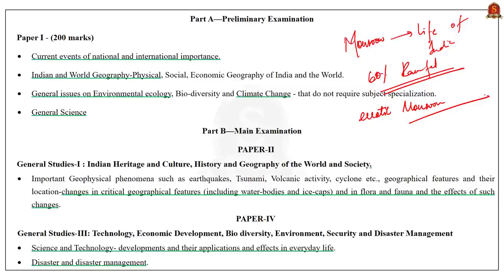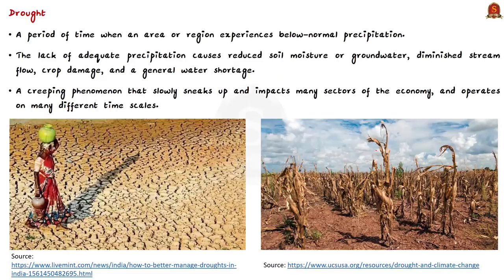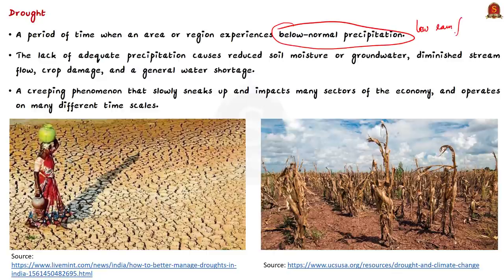According to the government's own report by Niti Aayog, India is facing its worst ever water crisis. The report says that by 2030, the country's water demand is projected to be twice the available supply. Generally, drought is a period of time when an area or region experiences below-normal precipitation. The lack of adequate precipitation — either rain or snow — can cause reduced soil moisture, lower groundwater, diminished stream flow, crop damage, and a general water shortage.